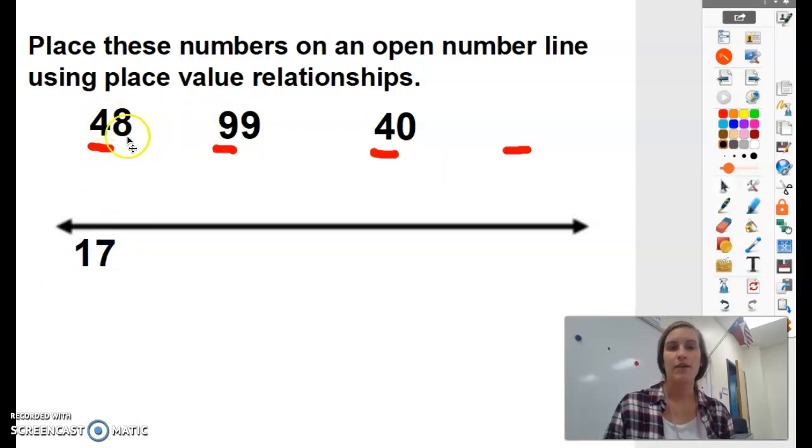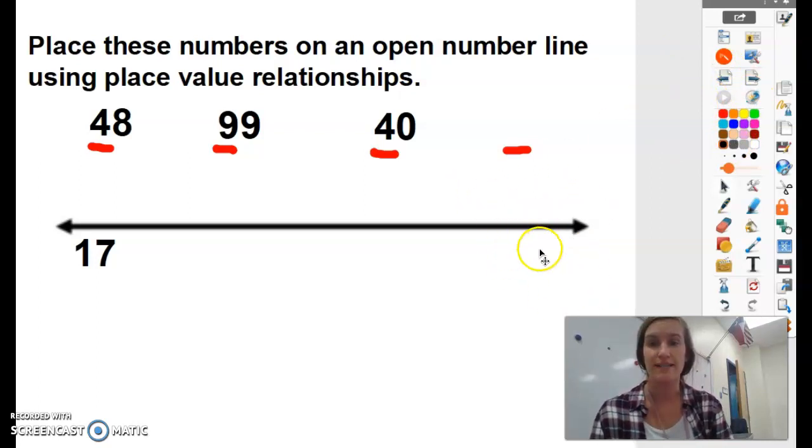Well, now that we're looking at four, another thing I might do is now just look for the greatest number. So I can put the greatest number at the end of our open number line. So looking right here, which number is the greatest? Which one has the biggest value in the tens place? 99, great job.